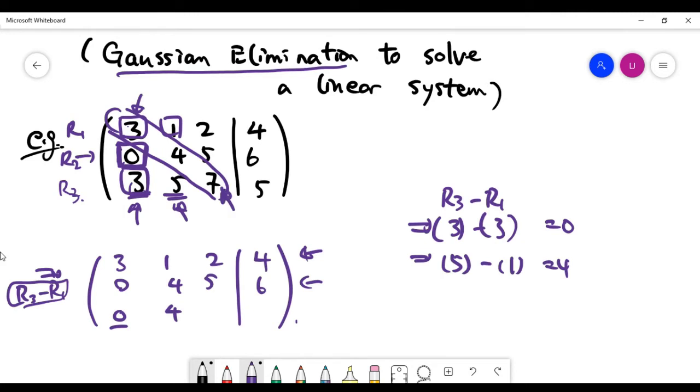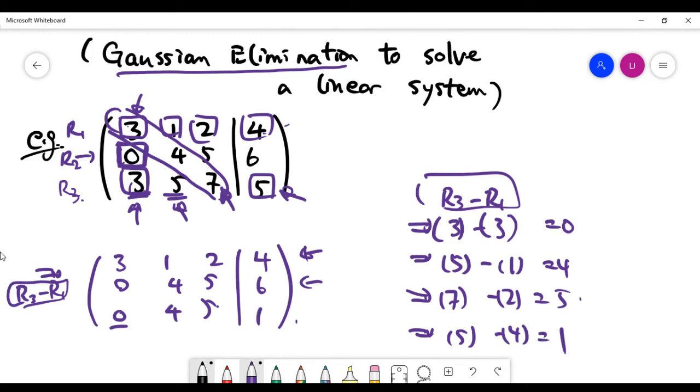How about the last spot? The last spot is going to be seven minus row one, which is two. So it's going to be five. And how about the number on the right hand side here? Row three minus row one means we have to subtract four from five. So it's going to be one.